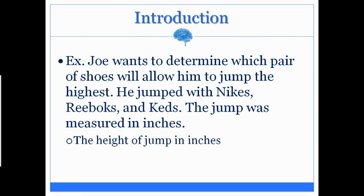He could have measured it any which way he wanted to — in feet, meters, anything. But it's simply the height of the jump. That height of the jump in inches depends on the independent variable and the levels of that independent variable: the Nikes, the Reeboks, and the Keds. That is going to likely alter the height of his jump, and that is what he measured — the height of the jump. Therefore, that's the dependent variable.